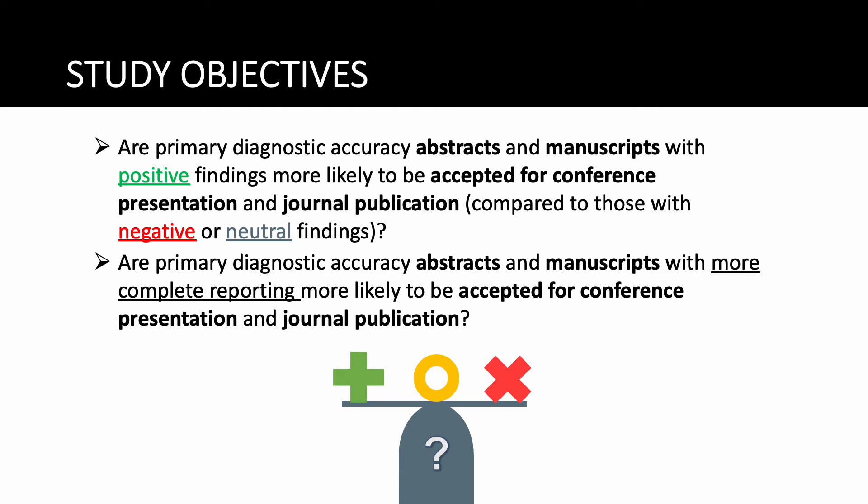The objectives of this study were to determine whether submitted primary diagnostic accuracy studies with positive findings are more likely to be accepted for presentation at radiology conferences and for publication in radiology journals. In answering these questions, we can determine whether there's a high risk of publication bias at the editorial level, or by exclusion, whether selective publication is more related to author-level factors. We also determined whether completeness of reporting according to the STARD for abstracts guideline is associated with acceptance.